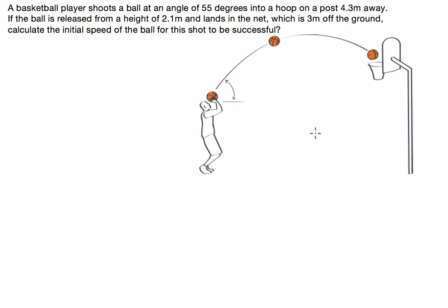G'day guys. I've been given this relatively tricky projectile motion question from a student of mine. The question is tricky because we've been given all the parameters of this projectile motion, however we haven't been given the launch velocity. So what we're going to have to do is use all the different parameters that we've been given and simultaneously solve for the launch velocity. So a basketball player shoots a ball at an angle of 55 degrees into a hoop on a post 4.3 metres away.